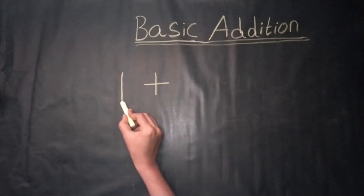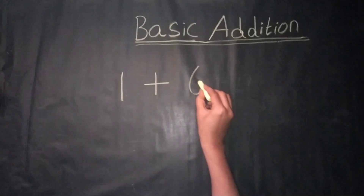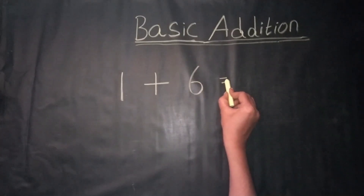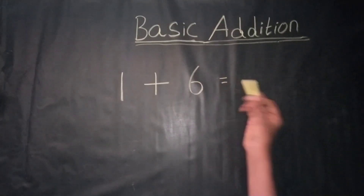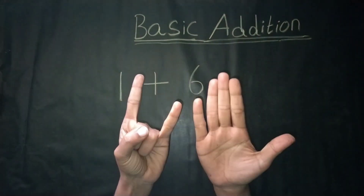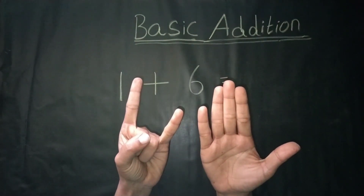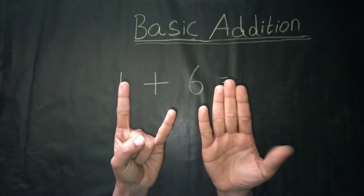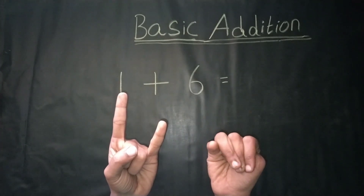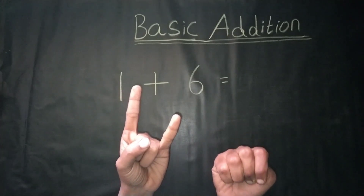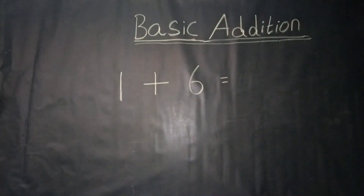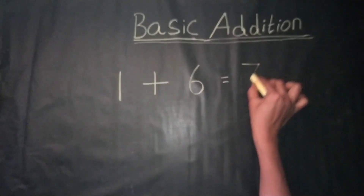1 plus 6 is equal to — counting by fingers, 1 plus 6. Count together: 1, 2, 3, 4, 5, 6, 7. We get the answer: 7.